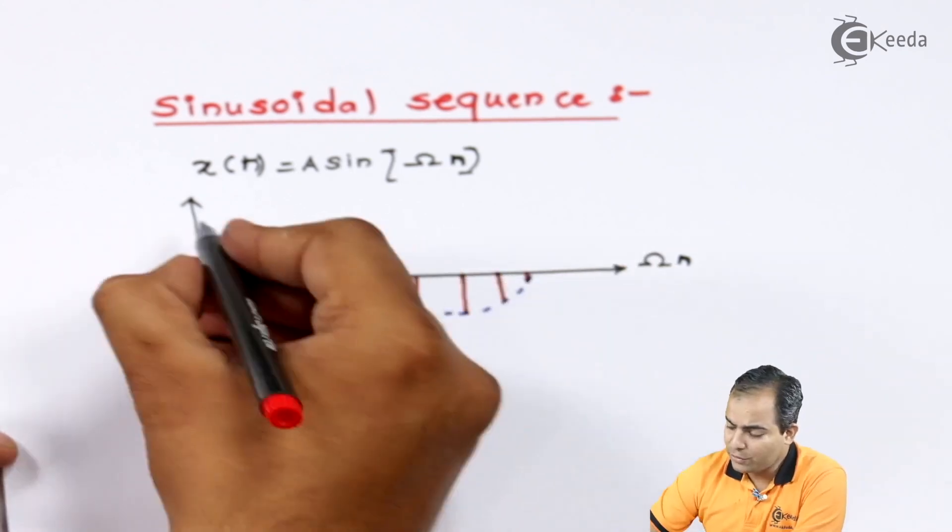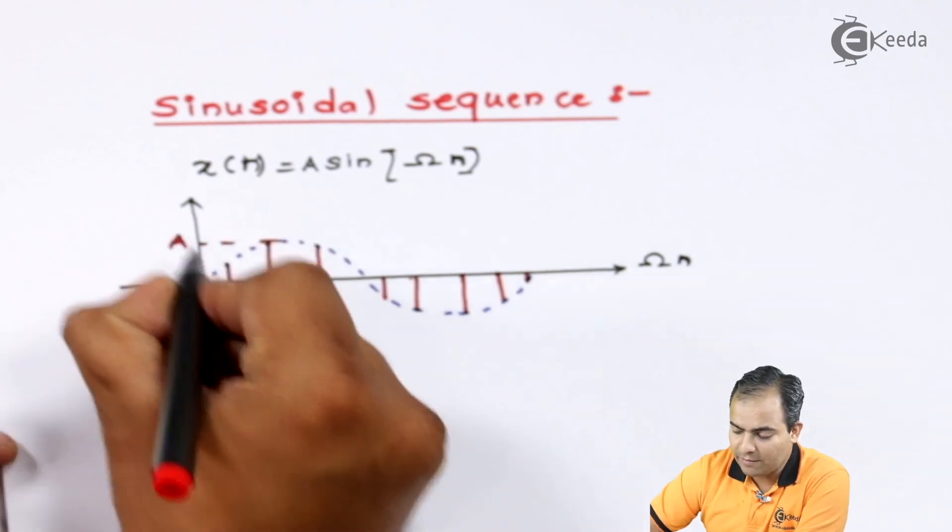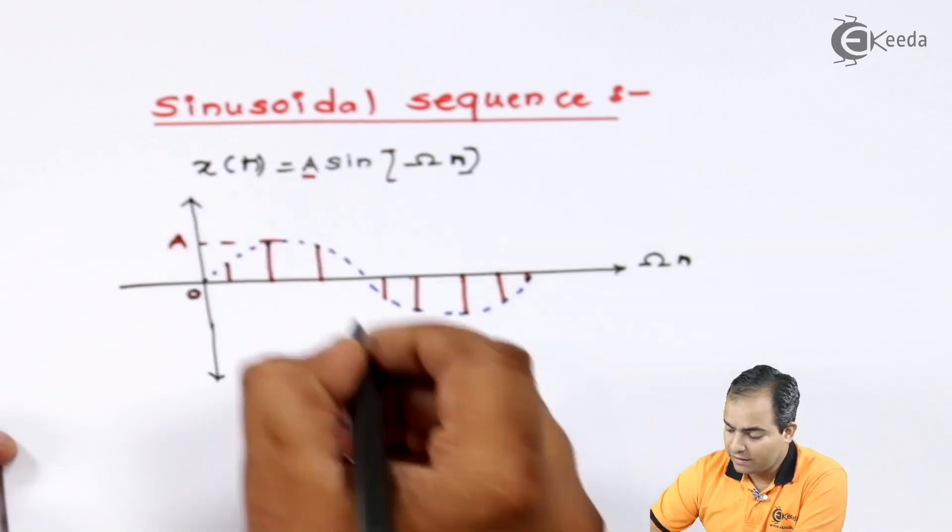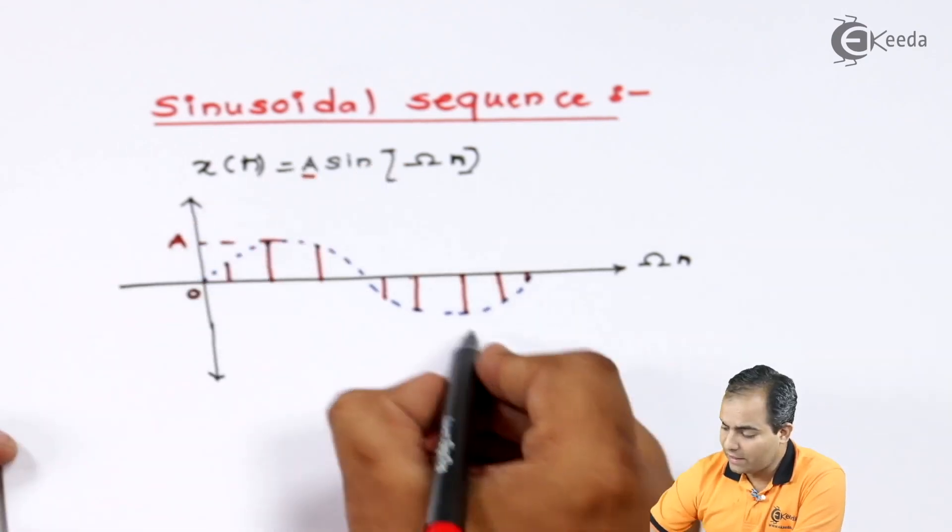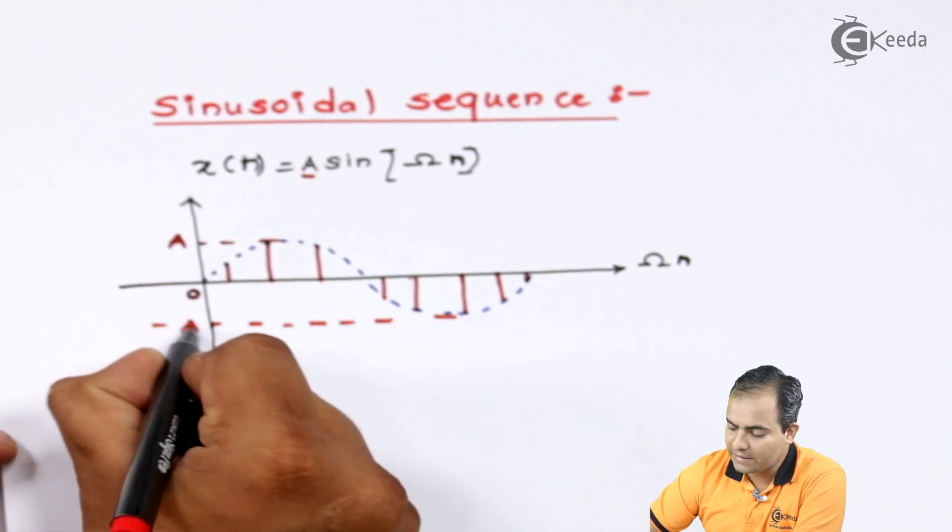Now in these samples, you can say this is the amplitude. The amplitude is given by A, so I'll write here positive A, and this one is the lowest negative amplitude, which is minus A.